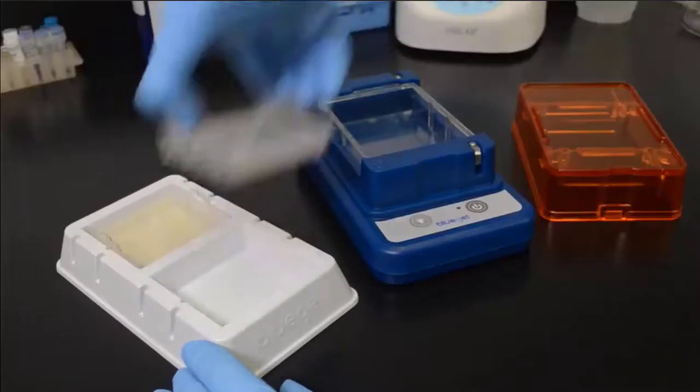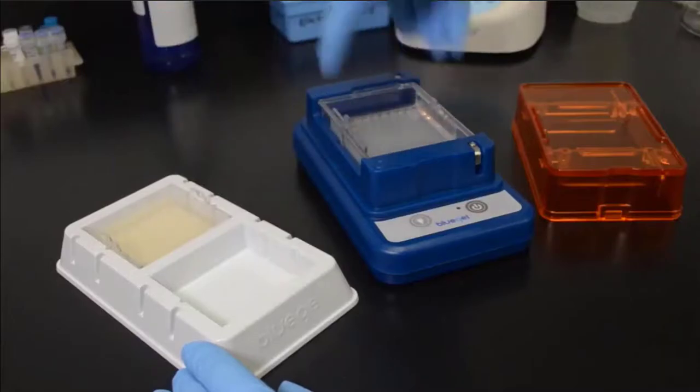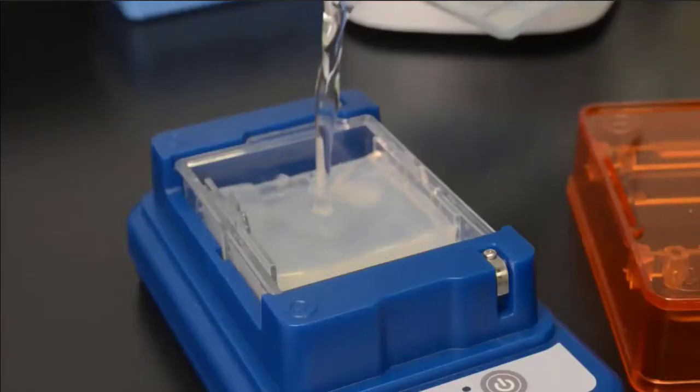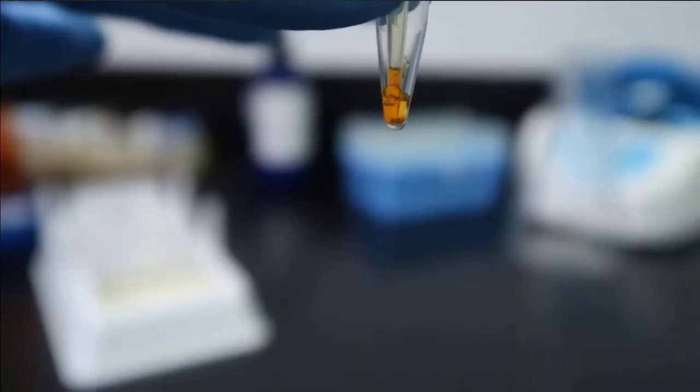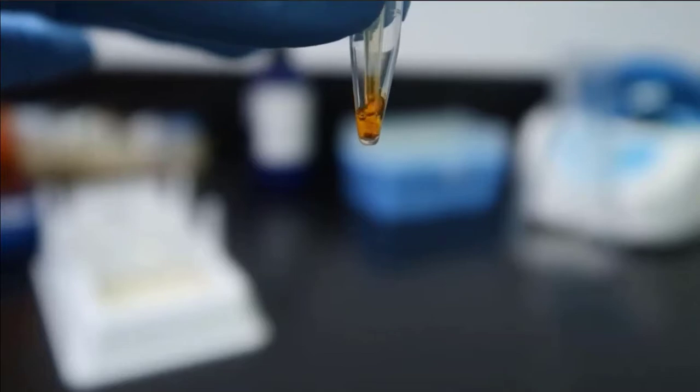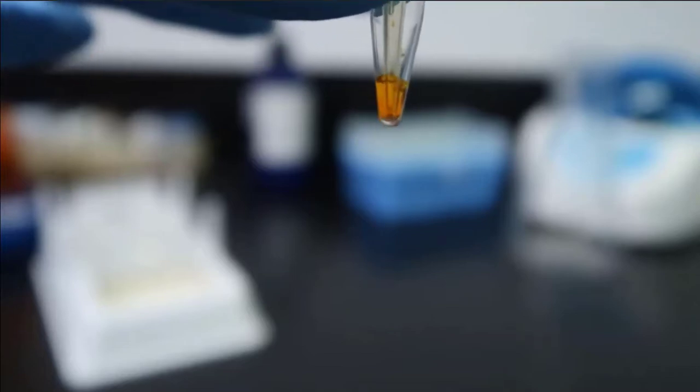When the gel is cooled, we place it into a gel electrophoresis chamber. We cover the gel with running buffer, which helps to conduct electricity. Before adding a DNA sample to our gel, we mix it with a loading dye, though often this dye is already added. This dye is more dense than the running buffer.